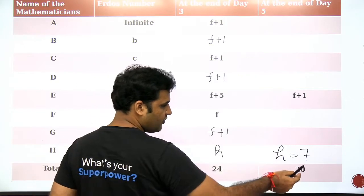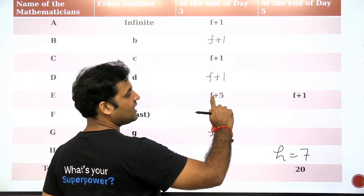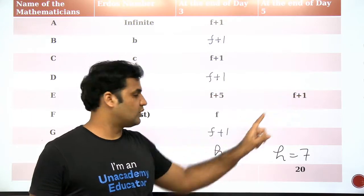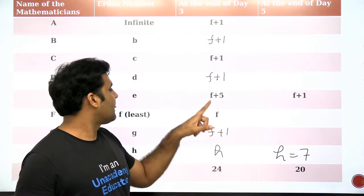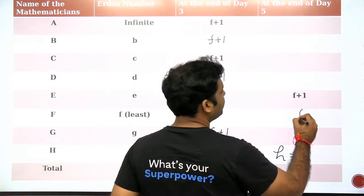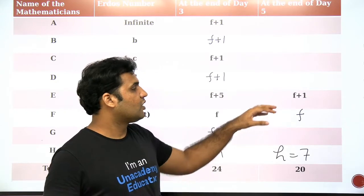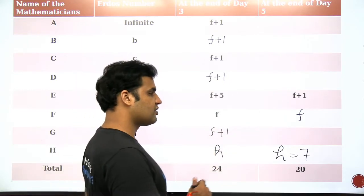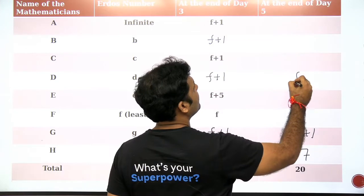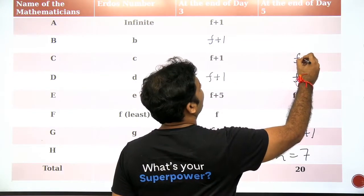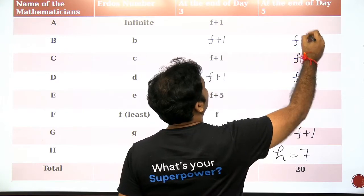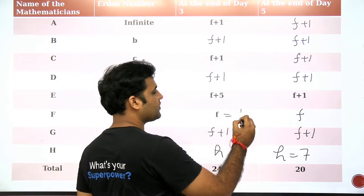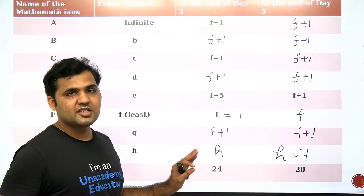The total is getting changed from 24 to 20 because E's Erdos number is getting changed from F+5 to F+1. E ka Erdos number 4 se decrease hua, tabhi total 4 se decrease hua. Because fifth day pe E aur F ne co-authorship kiya. So at the end of the fifth day, koi aur co-authorship nahi hua. E ka Erdos number F+1 hai, F ka F hai. G, D, C, A, B ka Erdos number bhi F+1 rahega. The value of F is 1. Now the table is complete and you can answer all the questions.